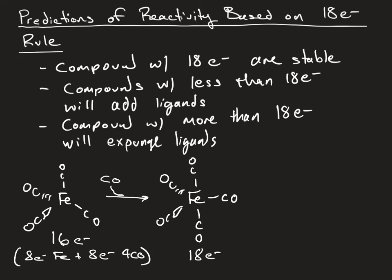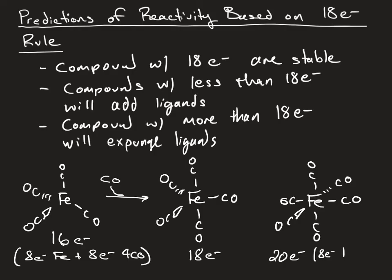In contrast, we can consider iron hexacarbonyl. This is a 20-electron species — we have 8 electrons from the iron plus 12 electrons from the 6 CO ligands, giving us 20 electrons. This is electron rich; it has too many electrons surrounding iron relative to the 18-electron rule, and we would correctly predict that this couldn't be made because it would readily eject a CO ligand to form iron pentacarbonyl. So we can predict some reactivity and stability of compounds based on the 18-electron rule. Now that we've gone through the 18-electron rule, the next video is going to address some binding interactions between metal and carbon-based ligands that are commonly found in organometallic chemistry.